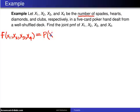The probability mass function in this case is the probability that the random variable x1 takes on the value little x1, the random variable x2 takes on the value little x2, x3 takes on the value little x3, and x4 takes on the value little x4.